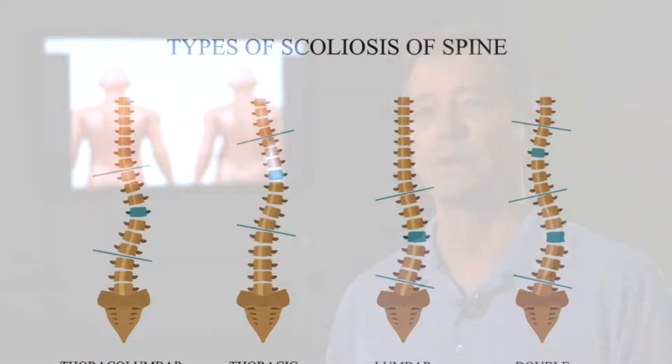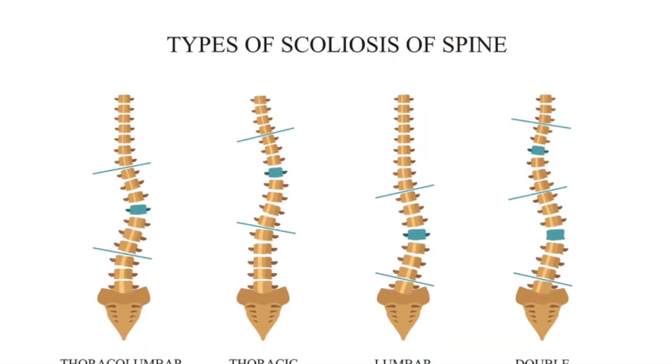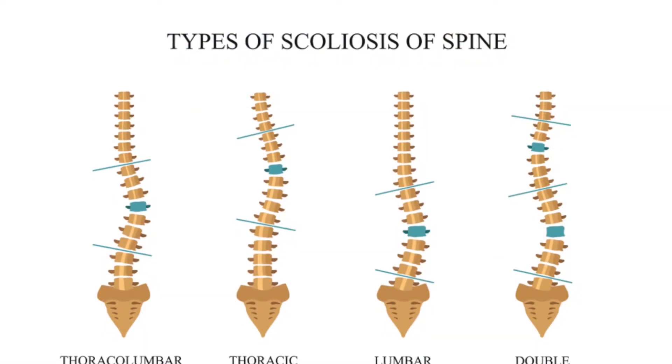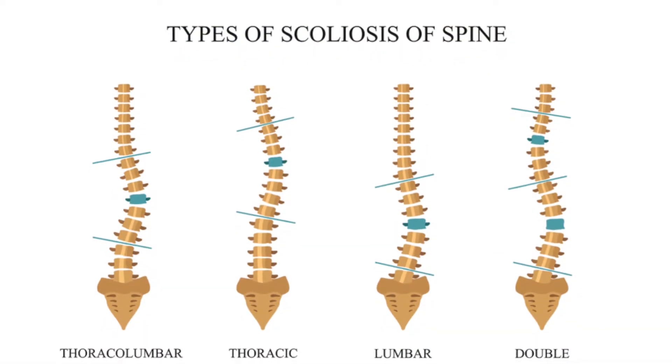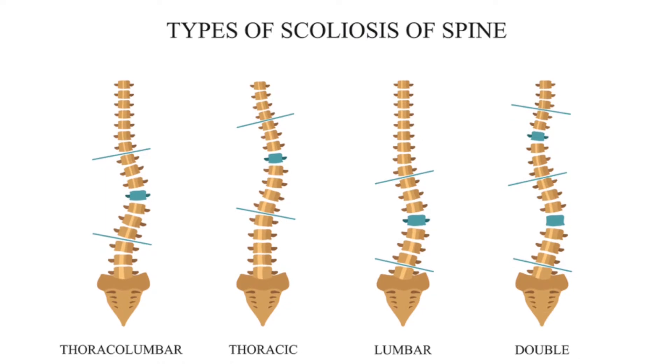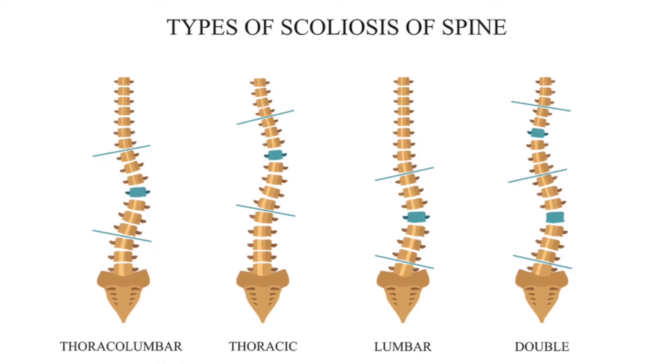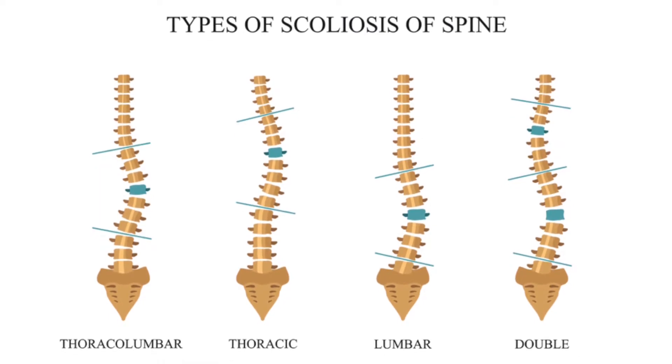Adult scoliosis may be worsened from a condition that began in childhood but was not diagnosed or treated. In some cases, scoliosis may result from a degenerative joint condition in the spine, like osteoporosis, where the bones soften and allow the vertebra to bend.